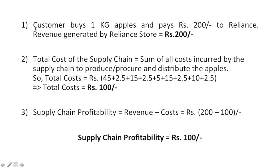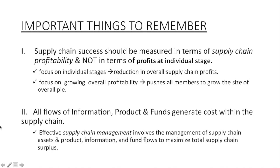Now let's collate all the costs involved. 200 rupees is what the Reliance store is getting from the customers. Overall, the company spends 100 rupees. The 45 rupees is the amount that the company pays per kg of apples to the farmers. So it takes Reliance 100 rupees to stock the apples at its retail shop. As per the formula of supply chain profitability — revenue minus cost — the value generated is 100 rupees.